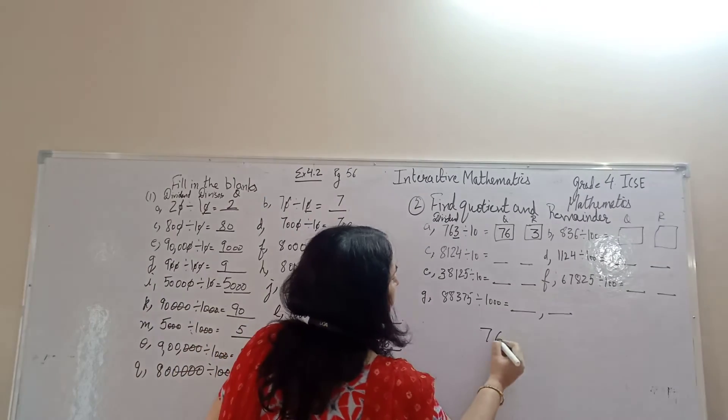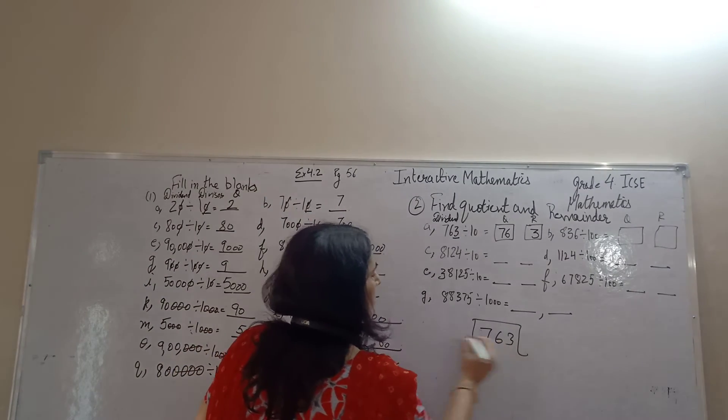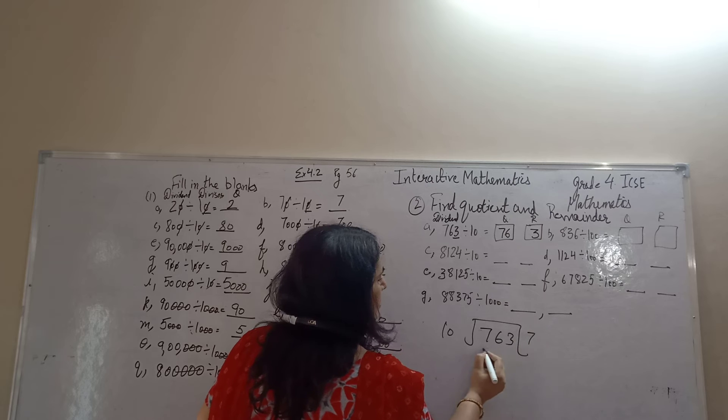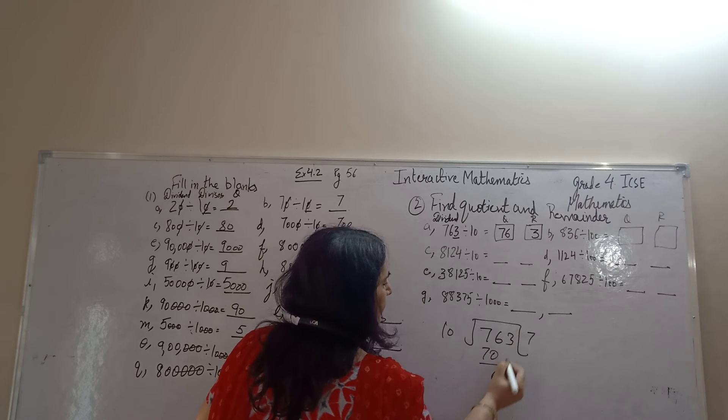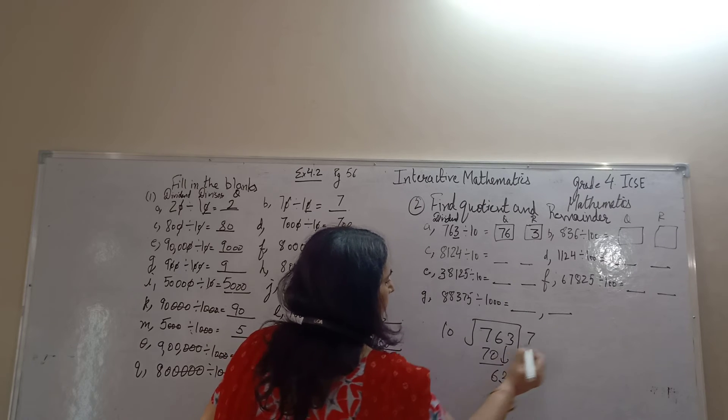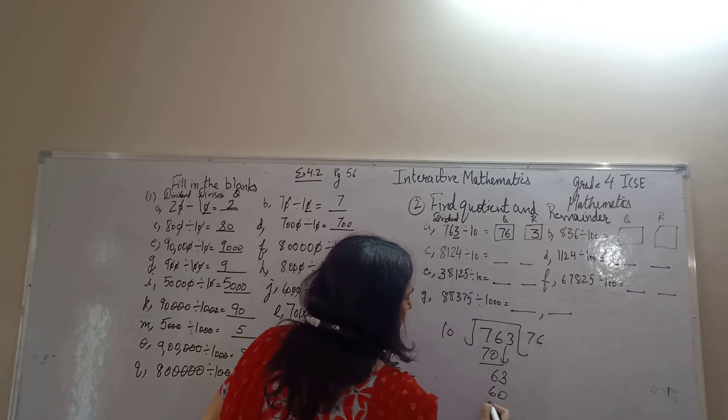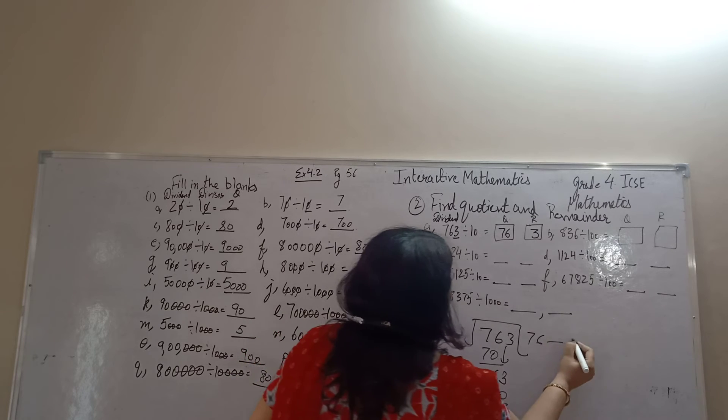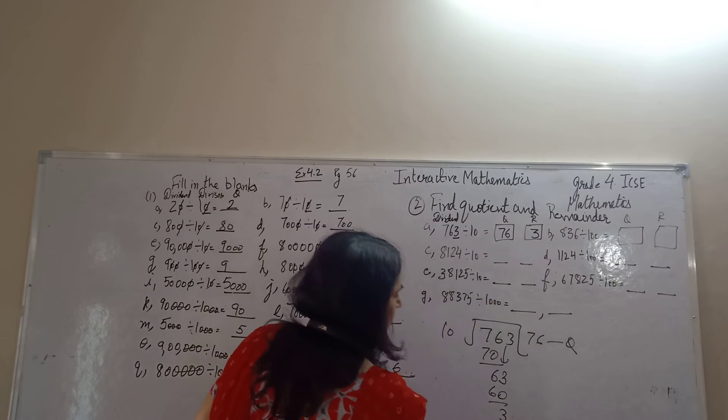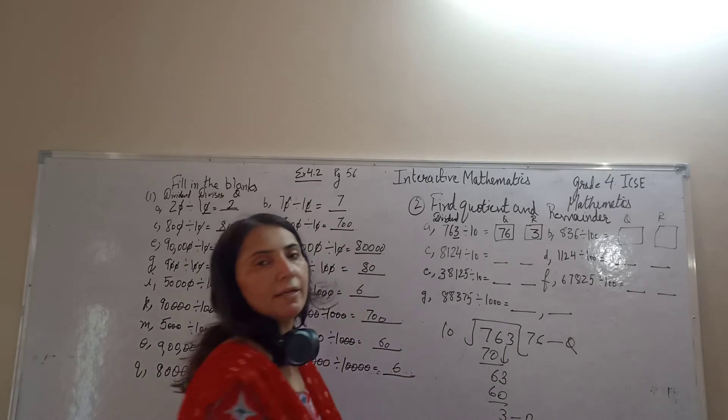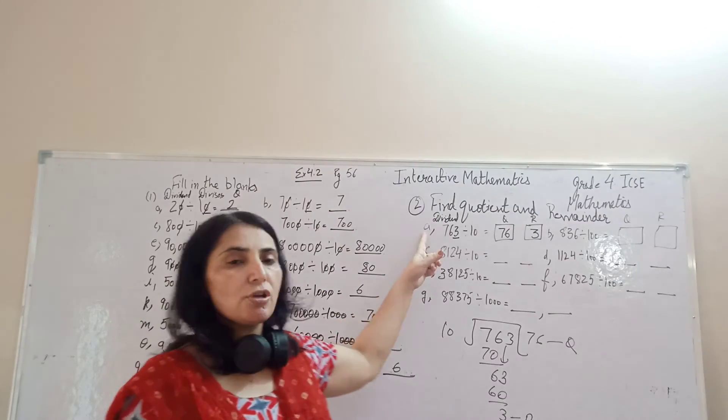You can check it like this. 10 sevens are 70. 6 left. Then 3. 10 sixes are 60. 76 is quotient. 3 is remainder. This is just the shortcut technique.